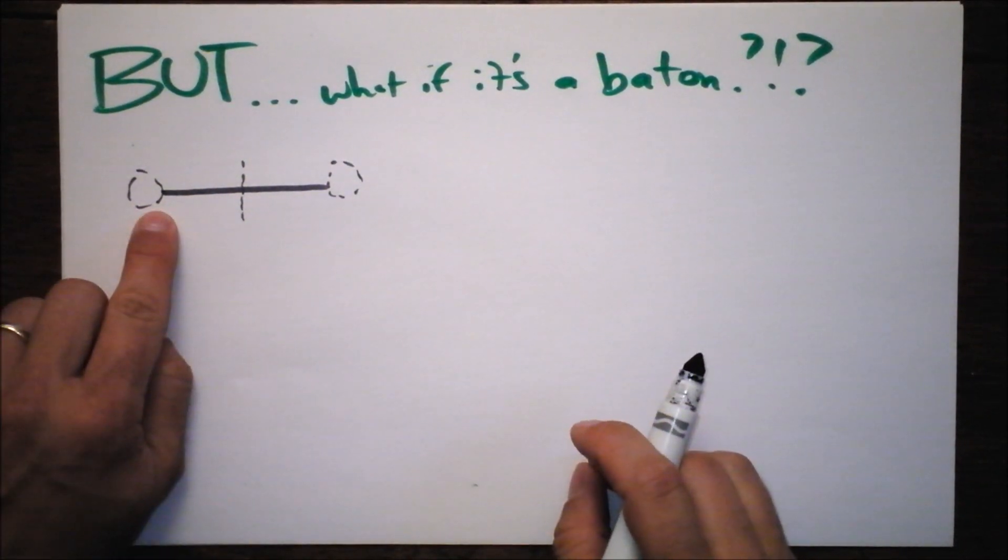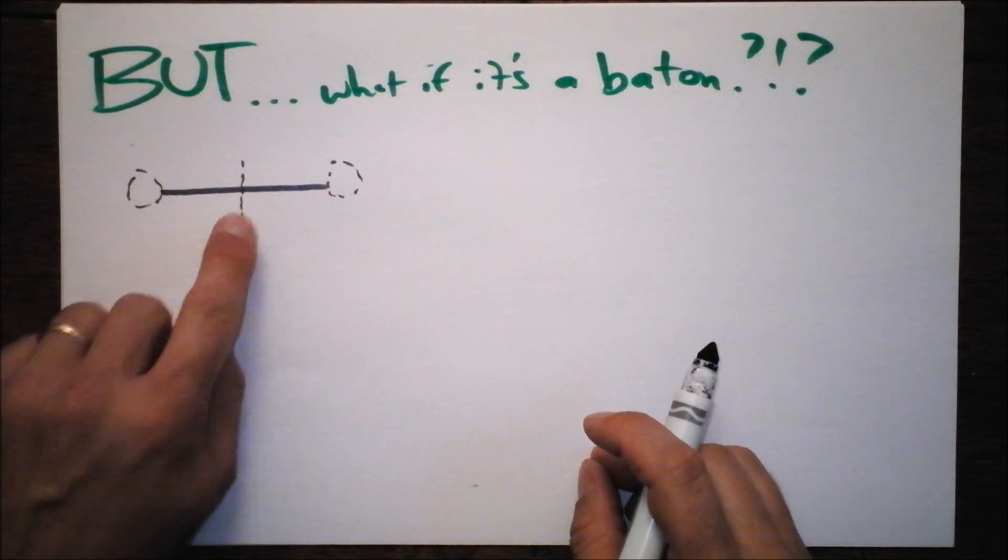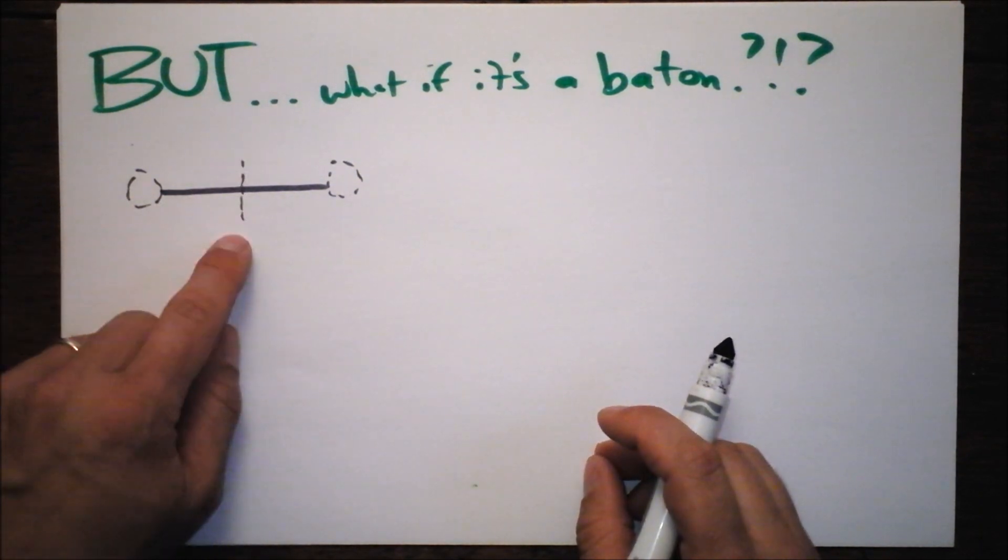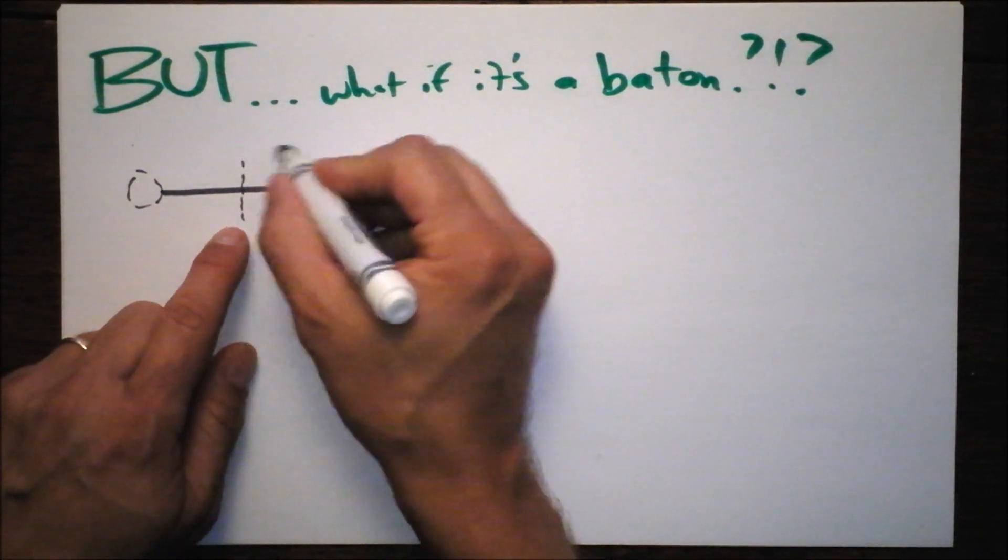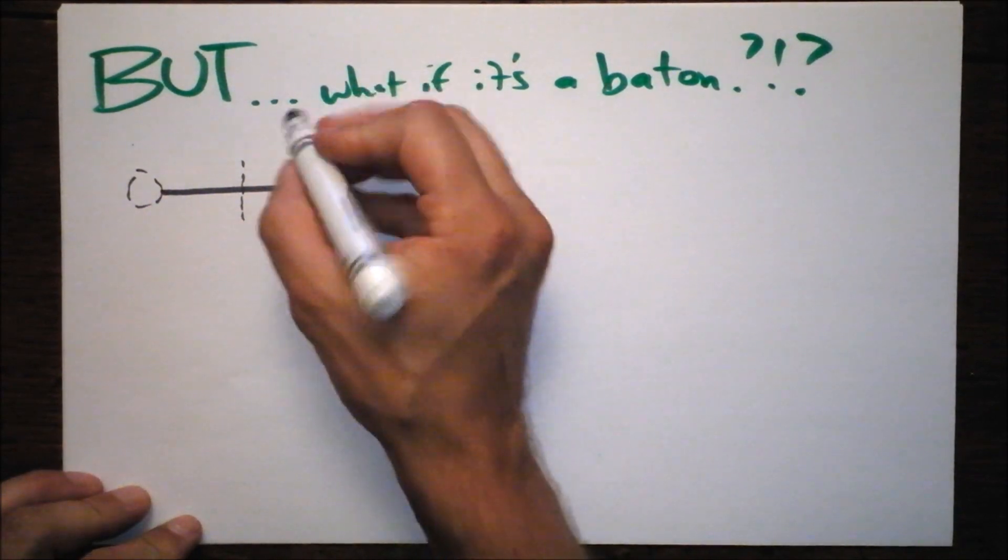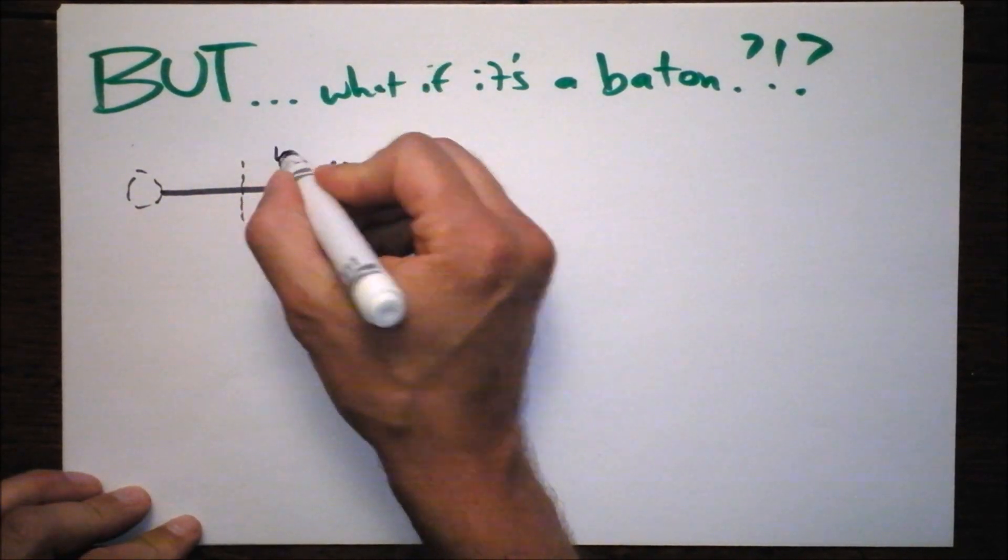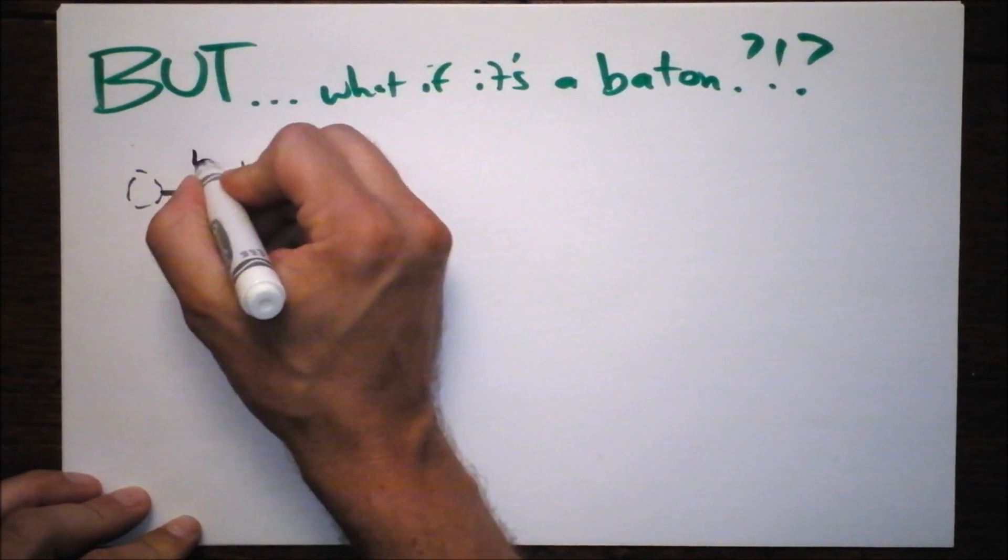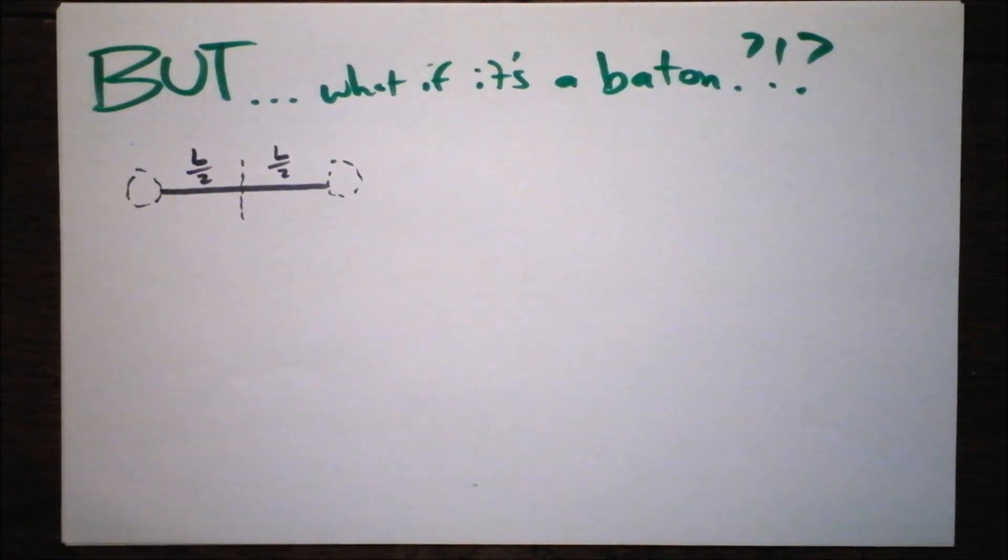We previously had the axis out at the edge. Now I imagine it's going to be quite a bit easier to twirl if the axis is at the center, but I don't want to start referring to this as aura or anything. I'm just going to call the total stick length L again. So you've got L over two over here and L over two over there.